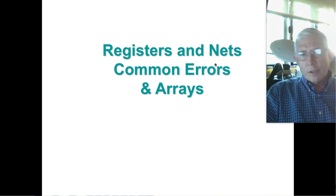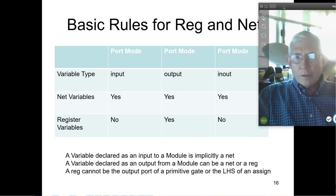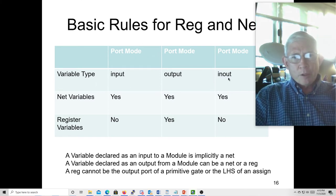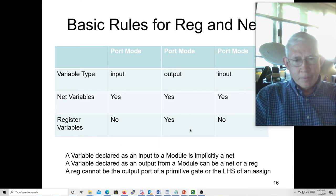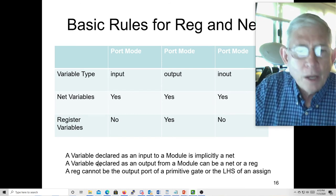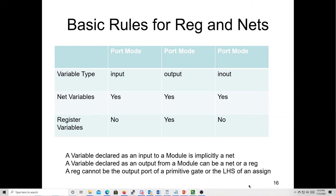Some of the common errors for nets and arrays. So here we have our variable type: input, output, and in-out. Can you be a net variable? Yes, for any of these. Can you be a register variable? Only for the output. A variable declared as an input to a module has to be a net and is implicitly declared as one. A variable declared as an output from a module can be a net or a register. And a variable cannot be the output port of a primitive gate or the left-hand side of an assign statement.